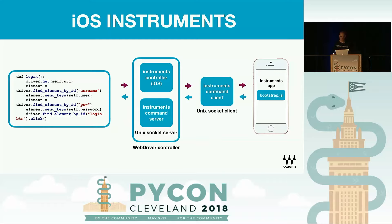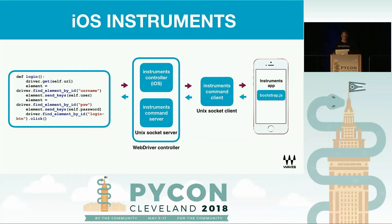Appium uses a layer called Instruments app inside the iOS mobile platform. On Android, they have a different way to do that. And basically it utilizes the libraries of the native device in order to control and automate the device itself.